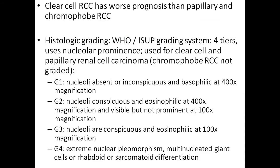After diagnosing clear cell renal cell carcinoma, the next step is to grade the tumor. Grading depends on the visibility and prominence of the nucleoli, classified from G1 to G4. In G1, the nucleoli are absent or inconspicuous even at high power of 40x. In G2, the nucleoli are visible at high power of 40x but not prominent at 10x or lower power.